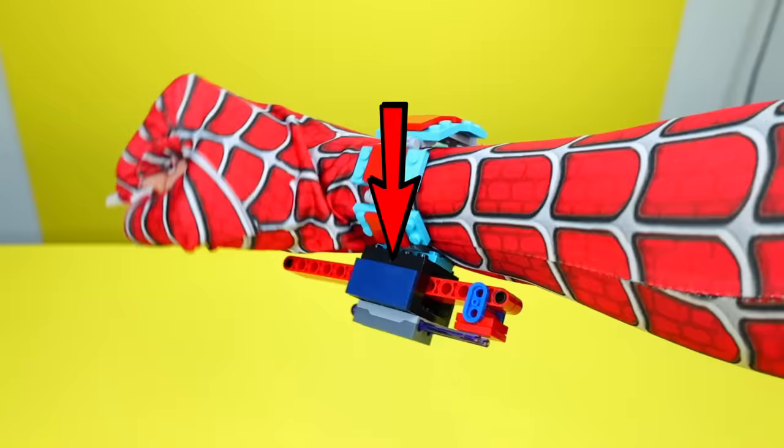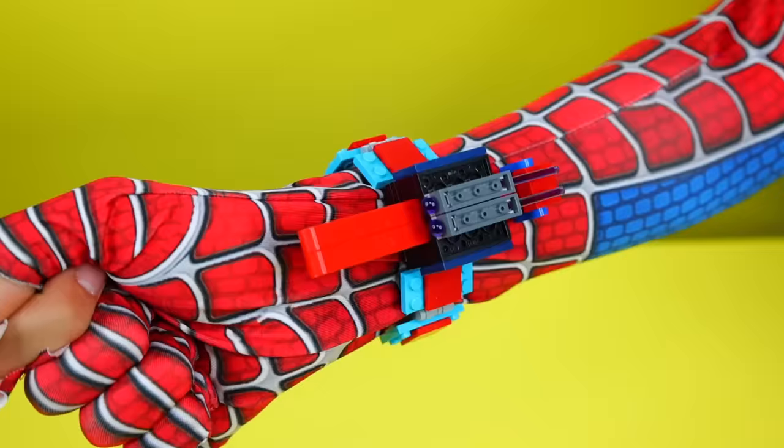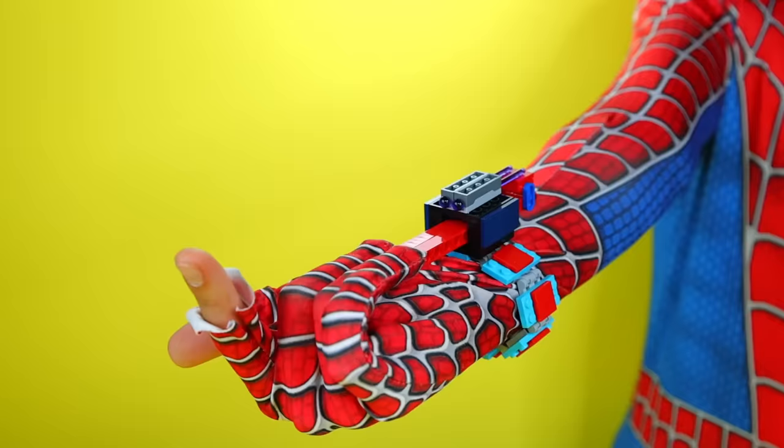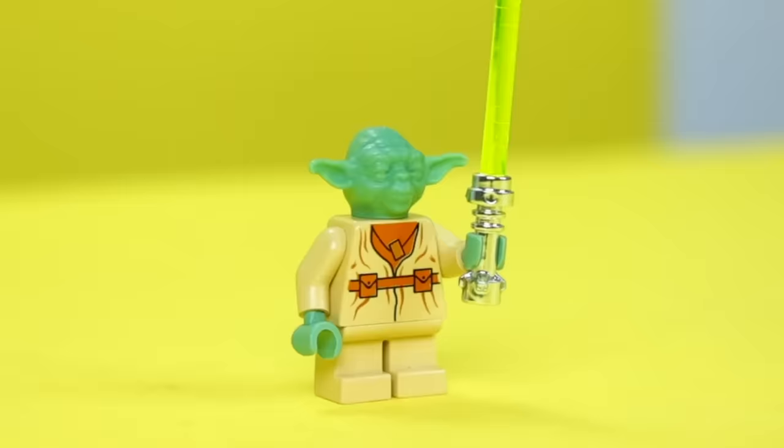This next Lego weapon actually goes on your wrist. And it actually has those tiny shooters that we used earlier. Basically, with your fingers, you can pull on this lever to activate them. Dang, this feels like something that Spider-Man would have.